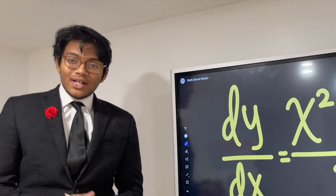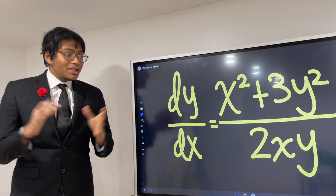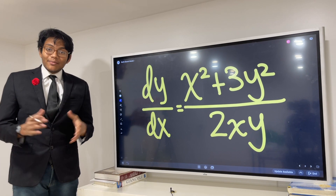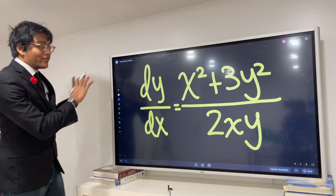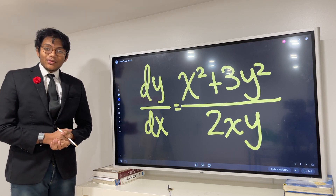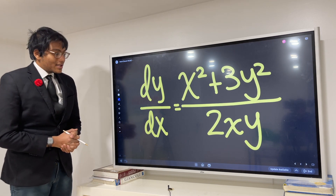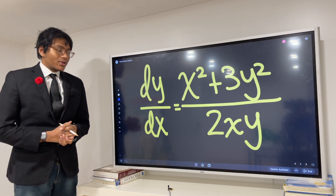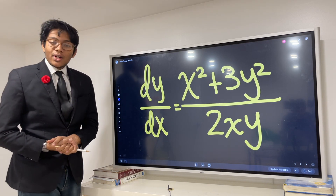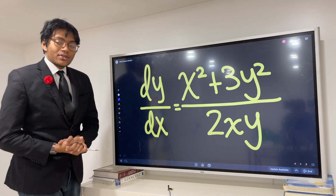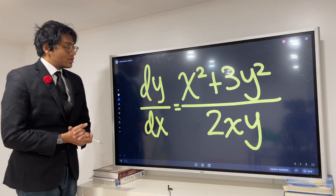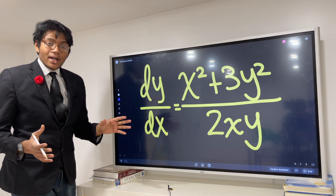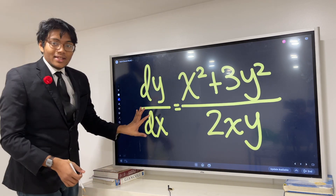Welcome to our next differential equation. We're in a new lab — this is the Berry Science Lab Studio, fully renovated. Here's the differential equation we're going to be solving: (x squared plus 3y squared) over 2xy. We're going to solve for y. This is a homogeneous differential equation, so we're going to start by simplifying this fraction.